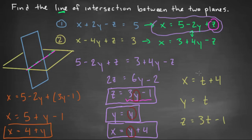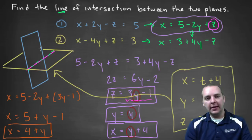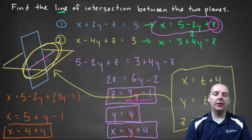then naturally x and z would now be functions of t, right? Because t is the same thing as y. So we've written these guys as a set of parametric equations. And this set of equations gives you this line of intersection right here.